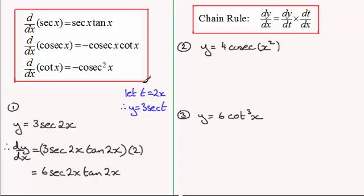Now in the next one we've got y equals 4 cosec of x squared. And we need to replace the x squared by a single letter t in other words. So for this one let's just put it over here. Let t equal the x squared. So that means that y would equal 4 cosec of t. So therefore y equals 4 cosec t.